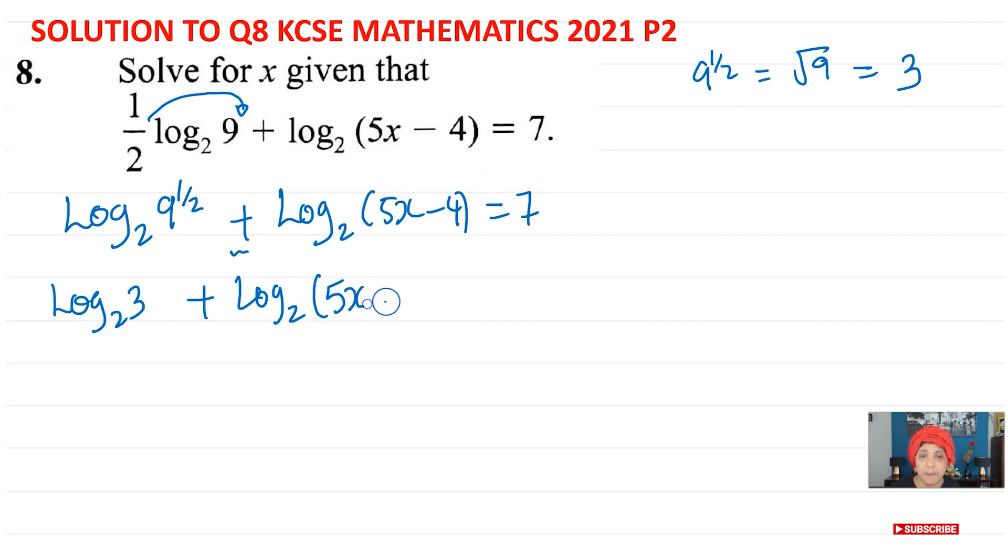Now they are added together. What can we do? We can use a product rule to put them together. So we're going to do log of 3 base 2 times this lot, 5x minus 4. Don't forget the bracket. So I'm going to put the other brackets as well, equal to 7.